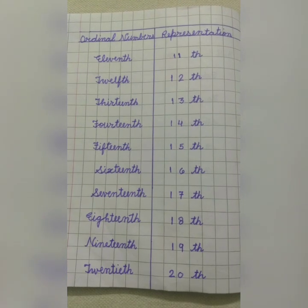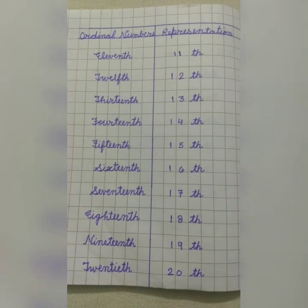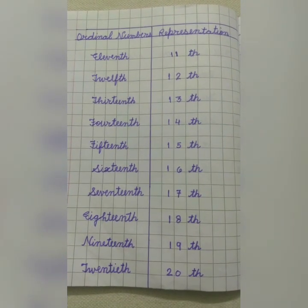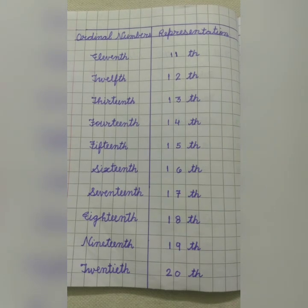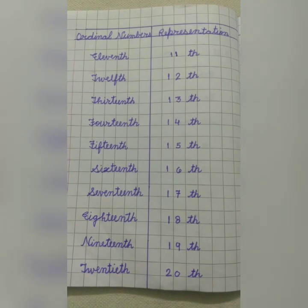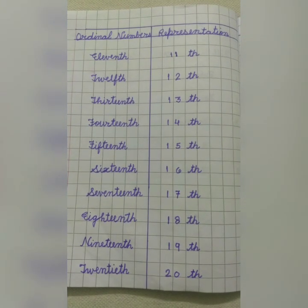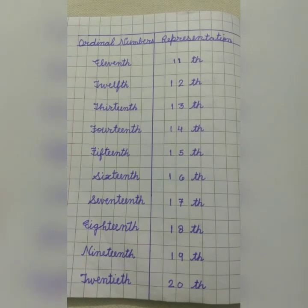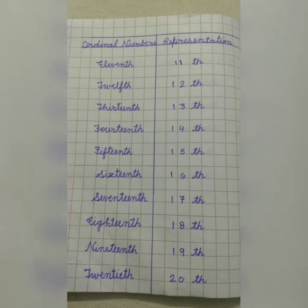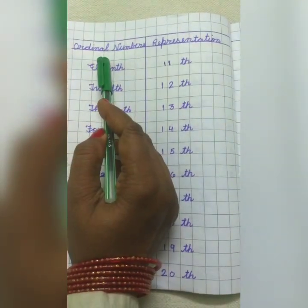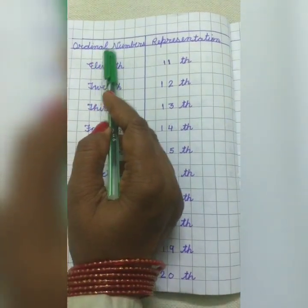Today we will continue with ordinal numbers from 11 to 20. In the previous video, we had divided the page into two columns. Similarly, today we will do it again. In the first column, we will write ordinal numbers and in the second column, we will write their representation.